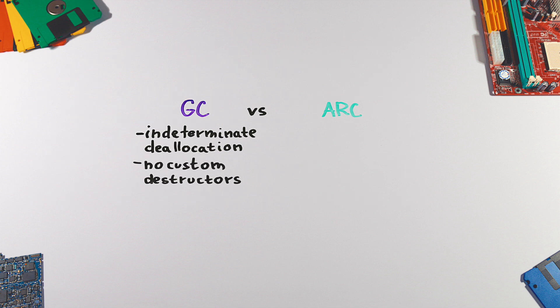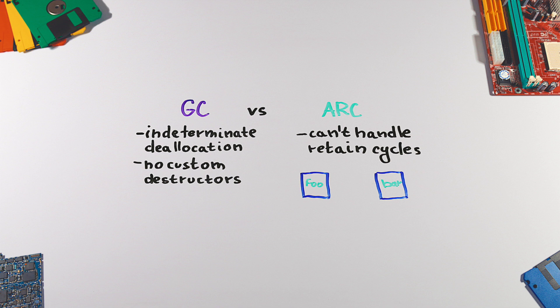Automatic reference counting, on the other hand, won't handle retain cycles, which is a case where two or more objects reference each other. This keeps them alive even though they are not needed anymore, causing a memory leak as a result.